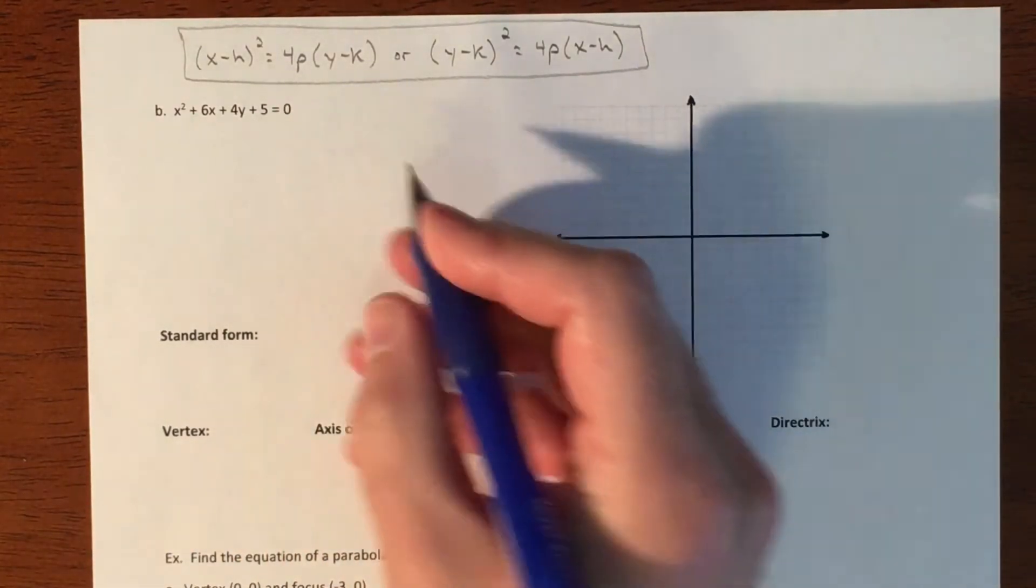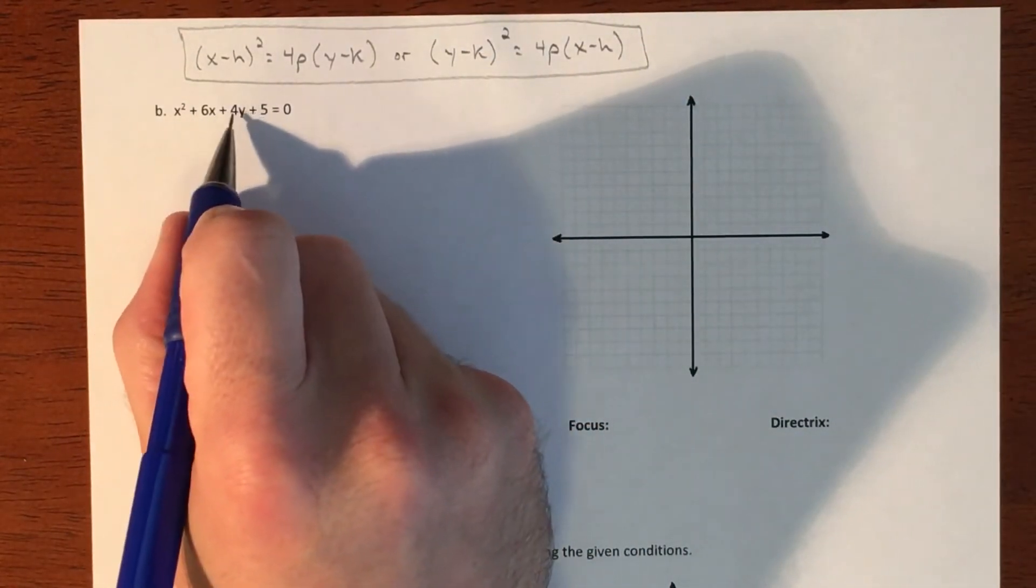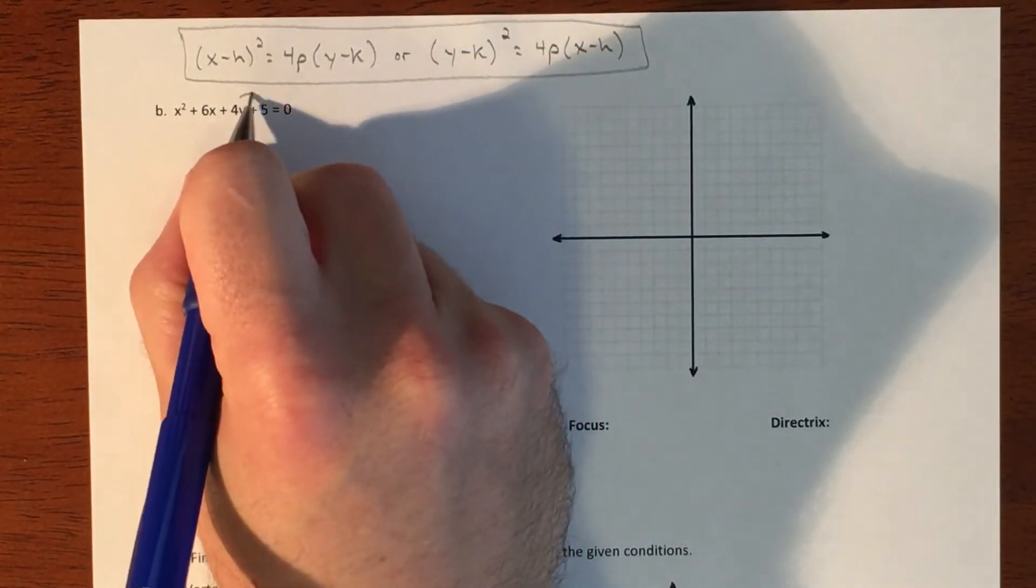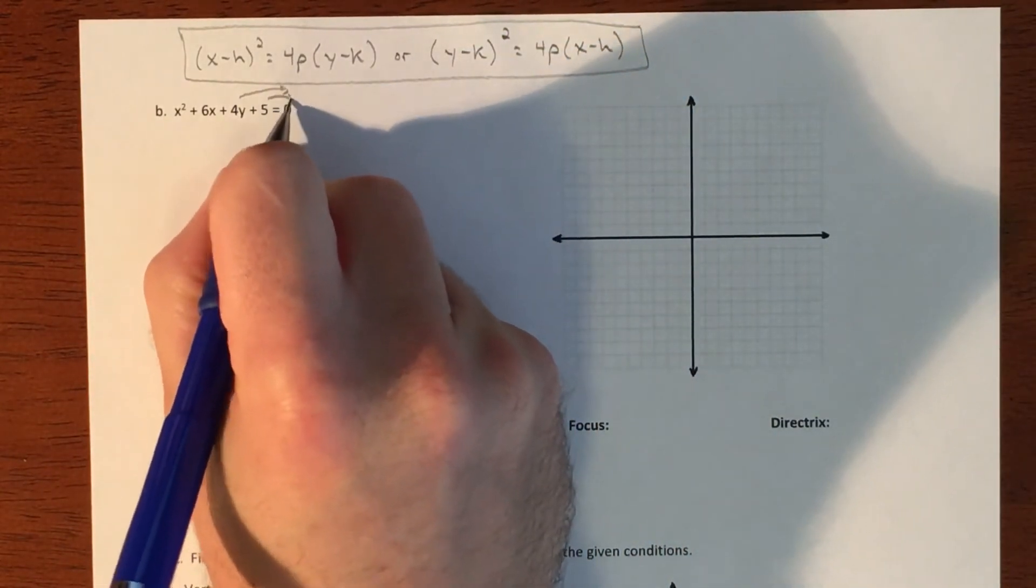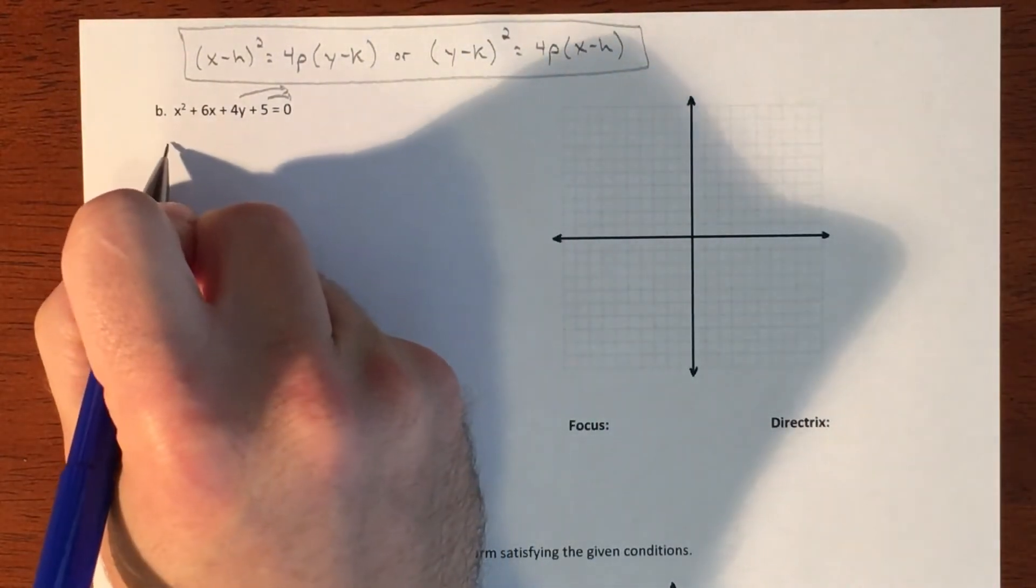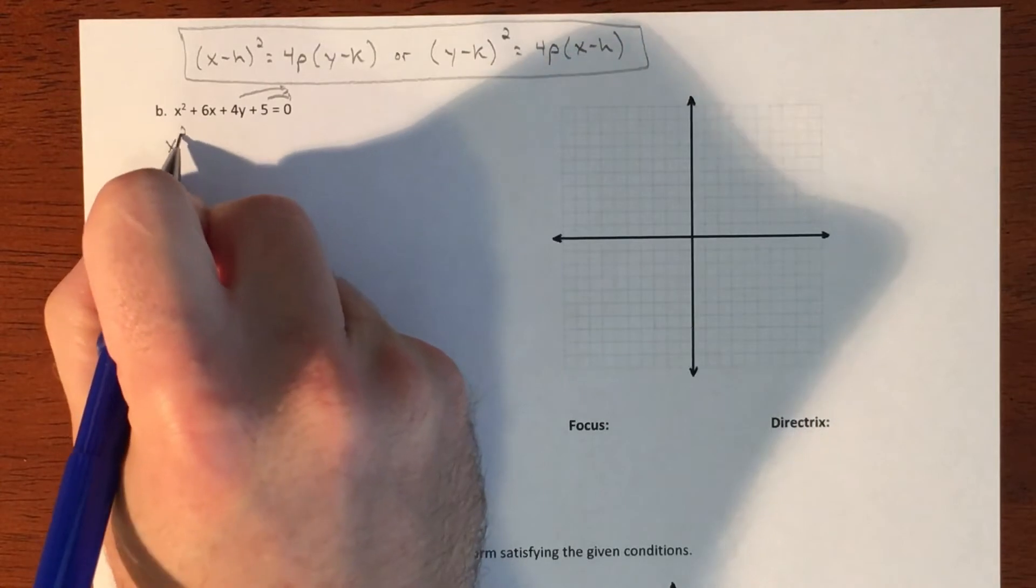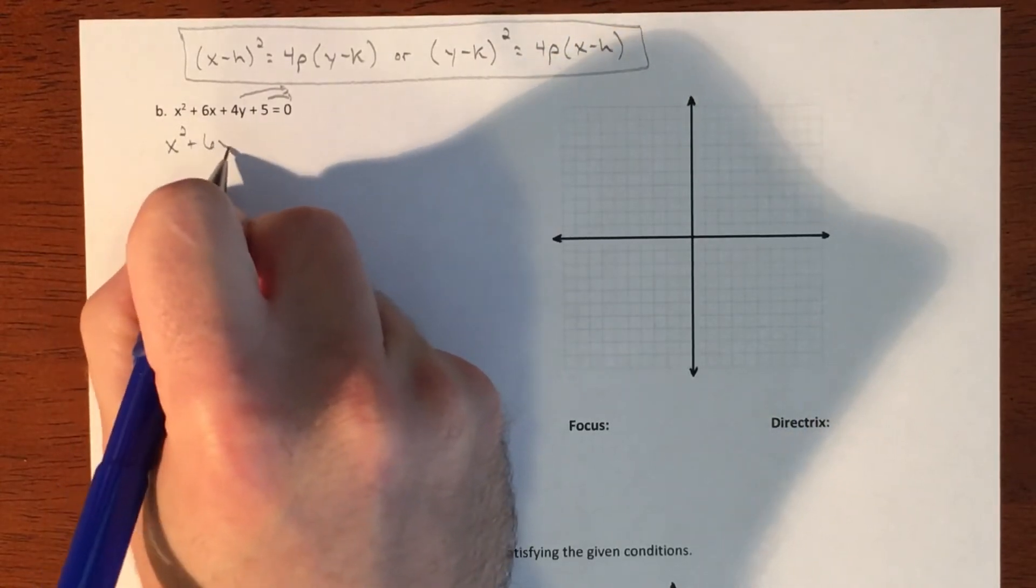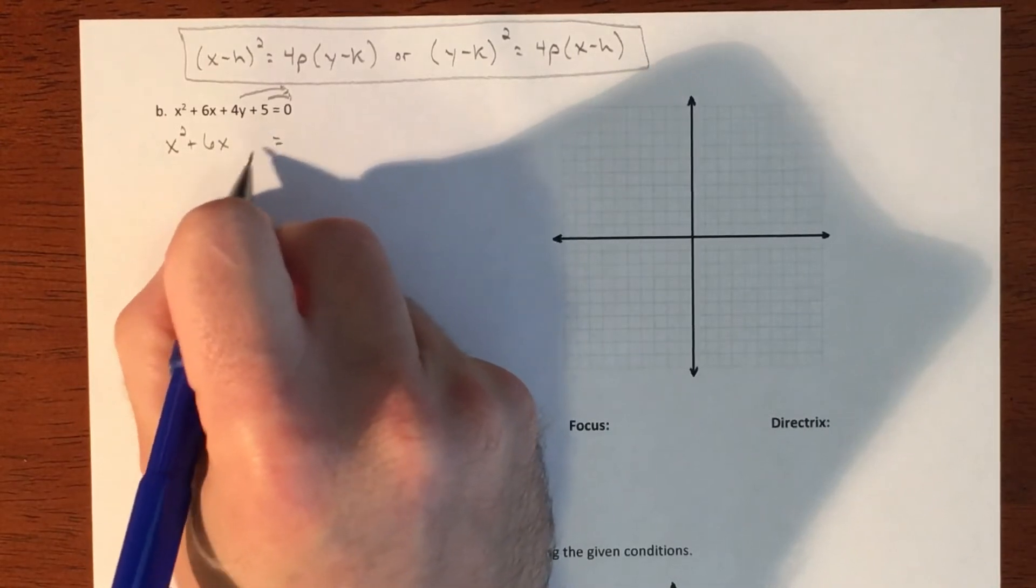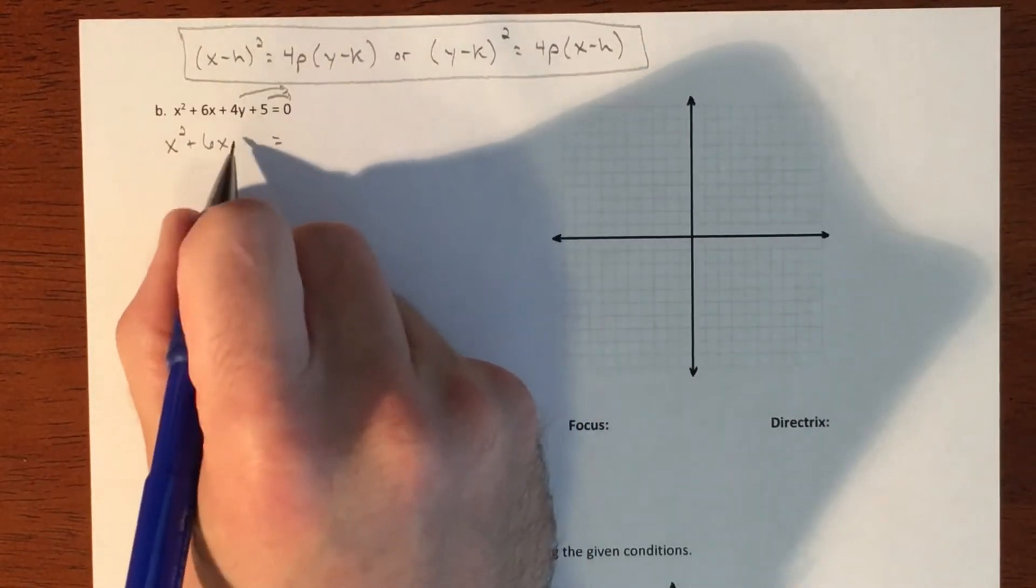So the first manipulation is anything that doesn't have an x on it, we need to move it over to the other side. So I'm going to be taking these two values and moving them over to the other side. So to do that, I'm going to have x squared plus 6x and I'm going to leave a space here because we are going to complete the square with this. So we're going to do some math on that.